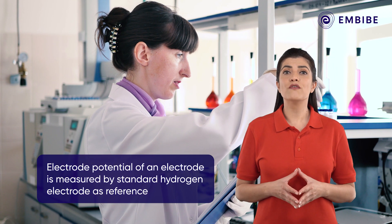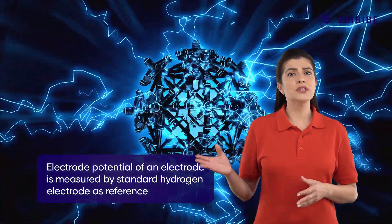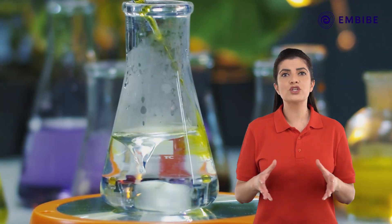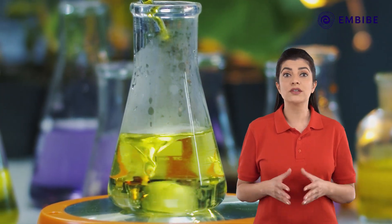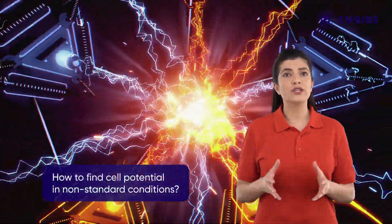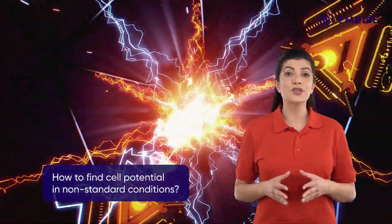The determination of the electrode potential using the standard reference electrode involves an assumption that the concentration of all the species involved in the electrode reaction is unity. However, this need not always be true. What's the solution to this real-world problem then?